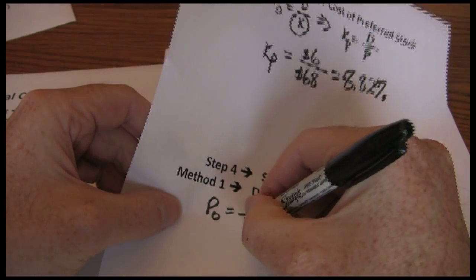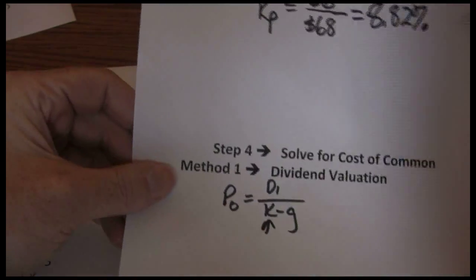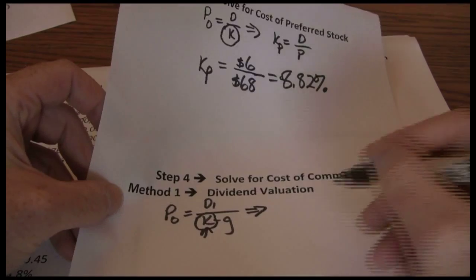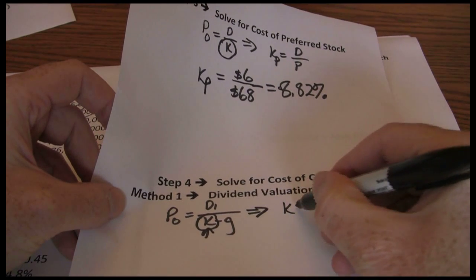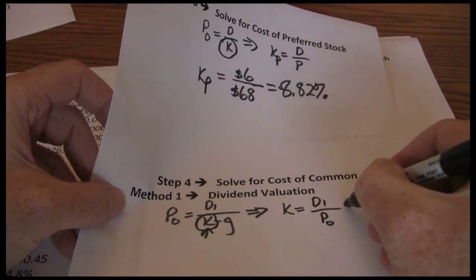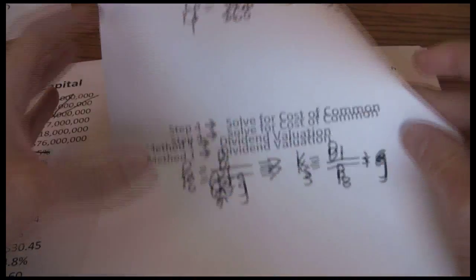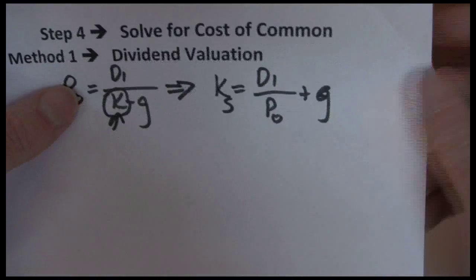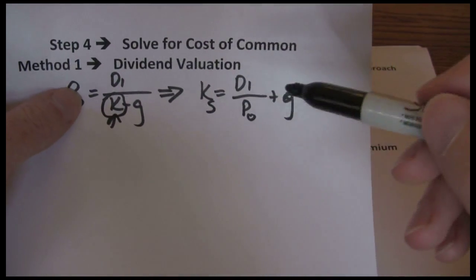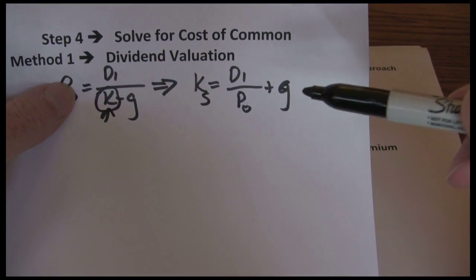So we want to solve for that required return and when we do that, we're going to get the following formula. I just put in a little subscript S to identify it's common stock. So our formula for the cost of common stock financing is D1 divided by P0 plus the growth rate.